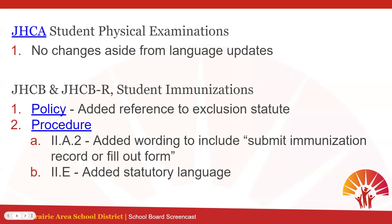The next policy we looked at was JHCB and JHCDR, which is student immunizations. For the policy itself, the only additional change made was to include a reference to an existing state statute about exclusion. Under the procedures, we added information in two sections. Under Section 2A, we added wording that a parent or guardian can submit an immunization record in addition to just filling out our school form, reflecting current practice as most families will submit a record from the clinic. The other change was under Section 2E — no change in practice or policy, but we expanded the section to clarify what exclusion is and for how long, as Wisconsin law has required exclusion for students in grades kindergarten through 5 that were behind schedule on immunizations if the district was not in 99% compliance for the previous school year.